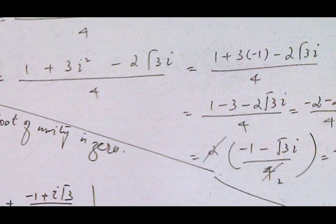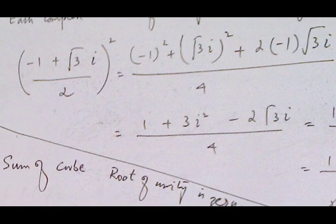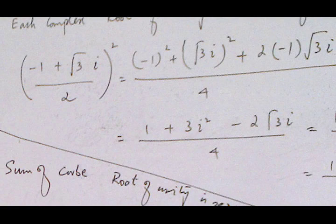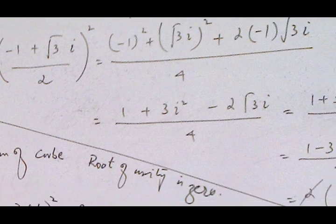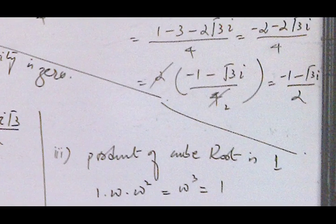Therefore if we square the complex root involving the plus sign it gives the other root involving the minus sign.